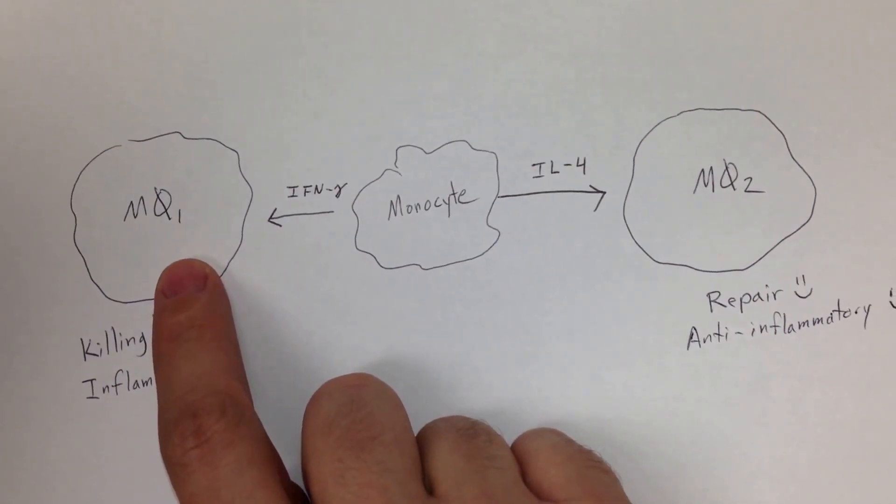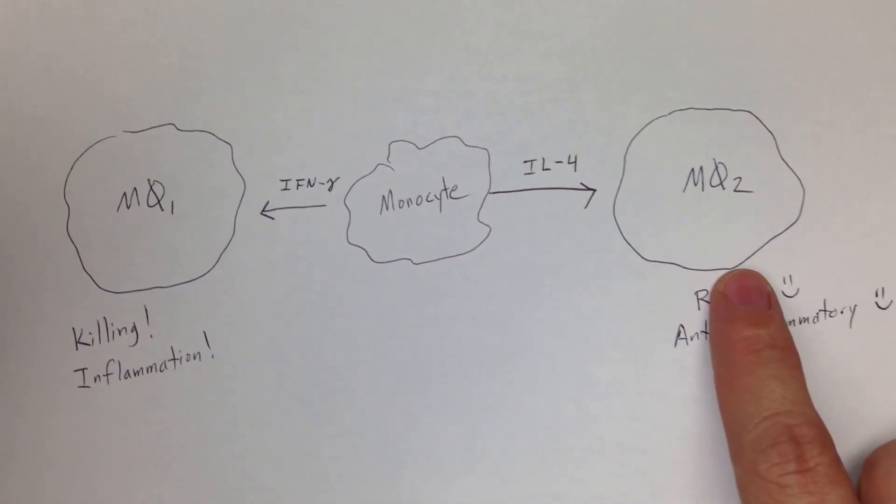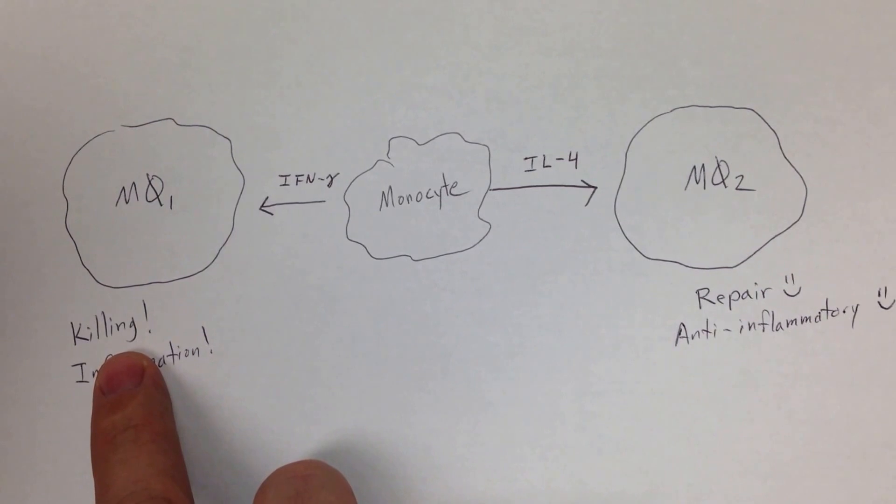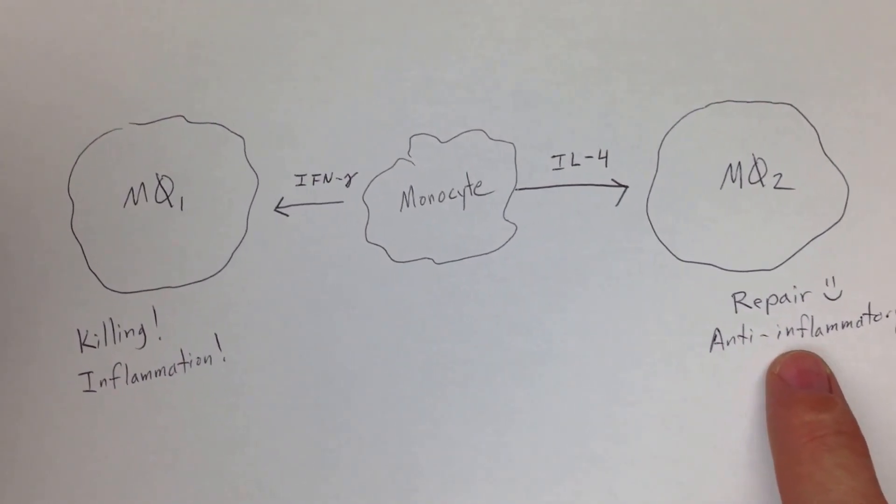This time we're going to look at macrophage type two. So instead of seeing macrophages that like to kill and cause inflammation, we're going to see macrophages that like to repair and do anti-inflammatory activities.